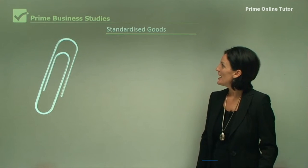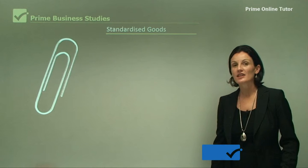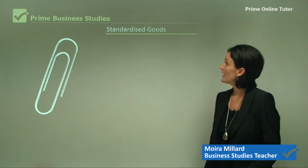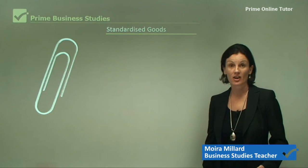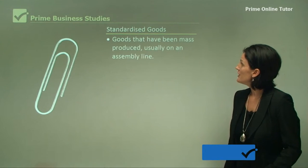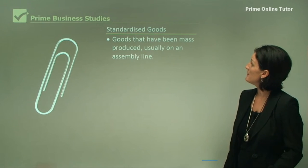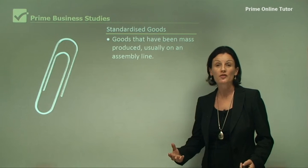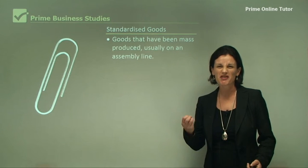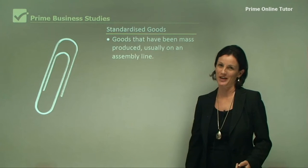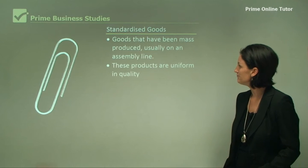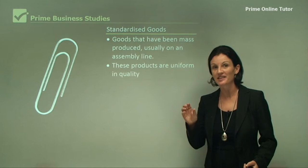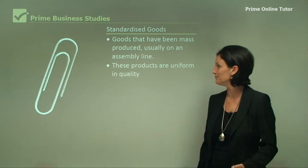Hi everybody. This lesson is on goods in different industries. Firstly we're going to look at standardised goods. These are goods that have been mass produced, usually on an assembly line. They produce thousands and thousands of products for the business. They are uniform in quality, meaning they are the same every single time.